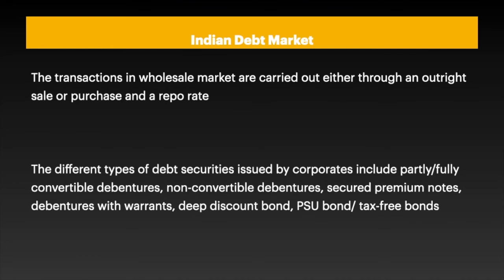The different types of debt securities issued by corporates include partly and fully convertible debentures, non-convertible debentures, secured premium notes, debentures with warrants, deep discount bonds, public sector undertaking bonds, and tax-free bonds.